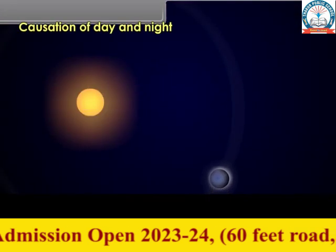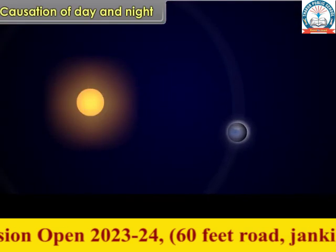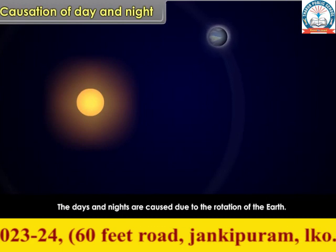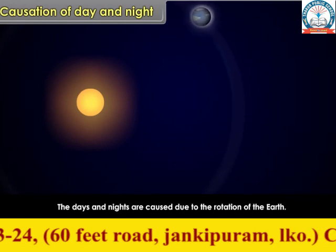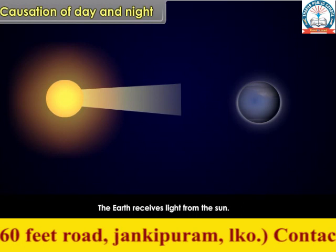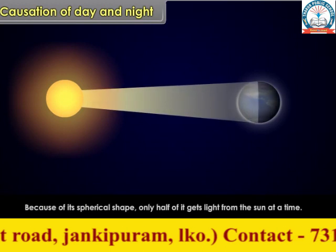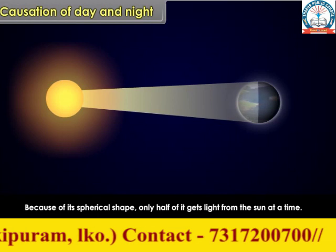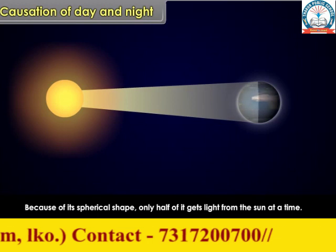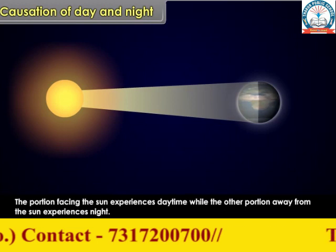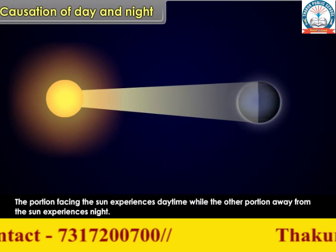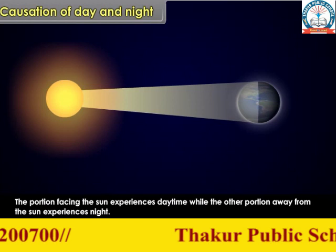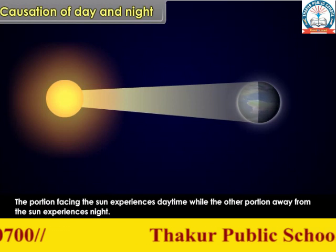Causation of day and night: the days and nights are caused due to the rotation of the earth. The earth receives light from the sun. Because of its spherical shape, only half of it gets light from the sun at a time. The portion facing the sun experiences daytime while the other portion away from the sun experiences night.